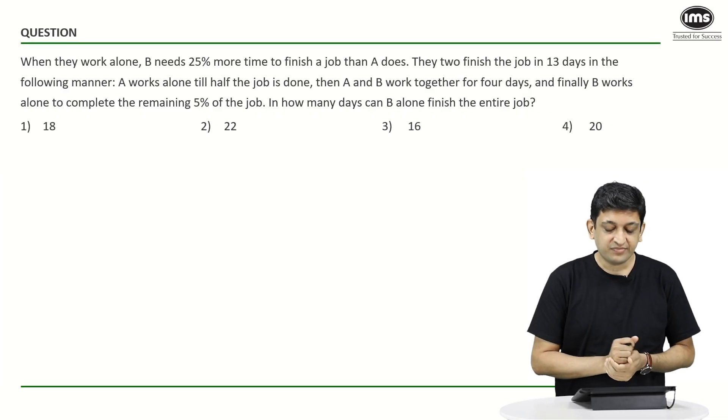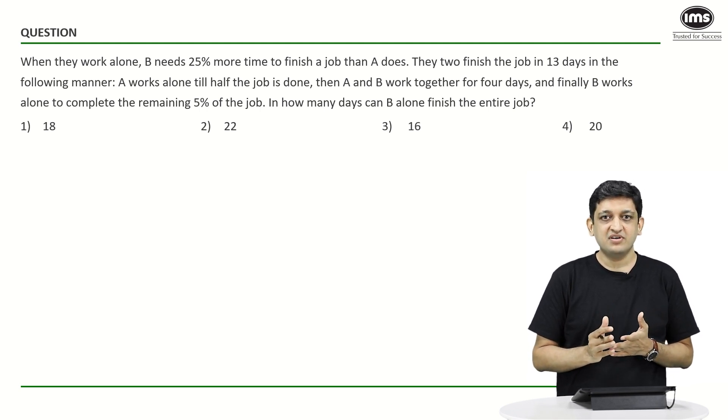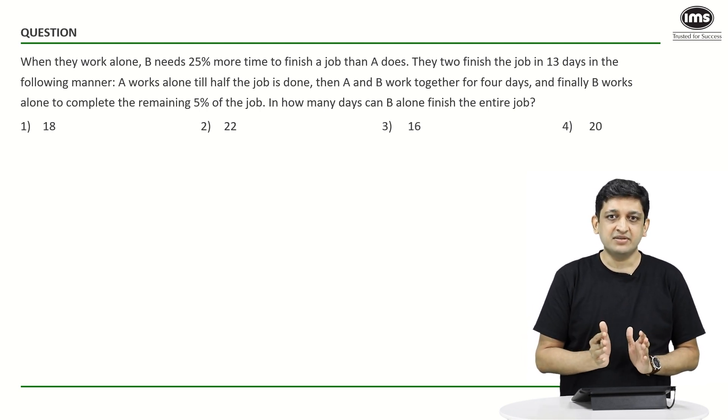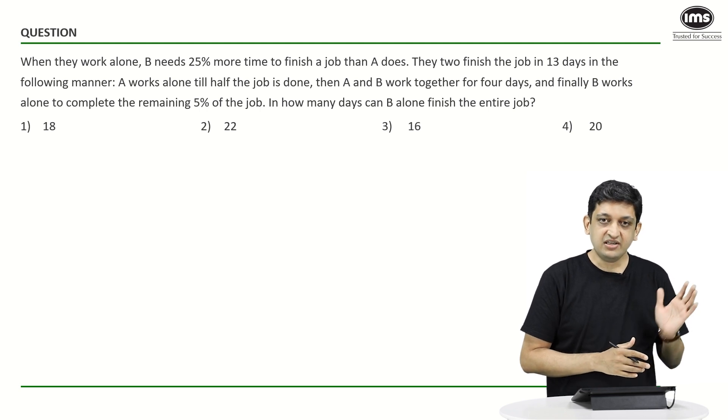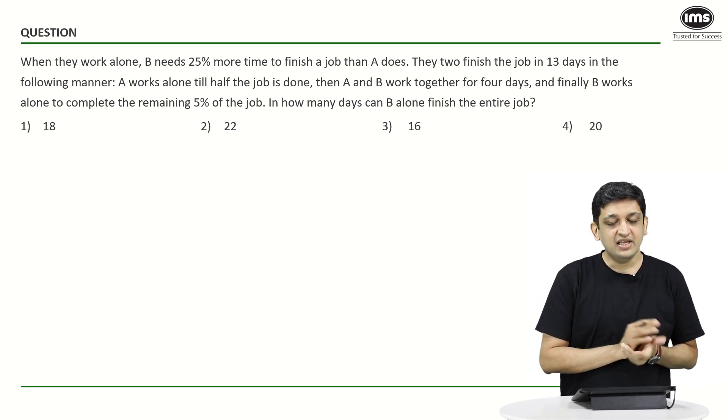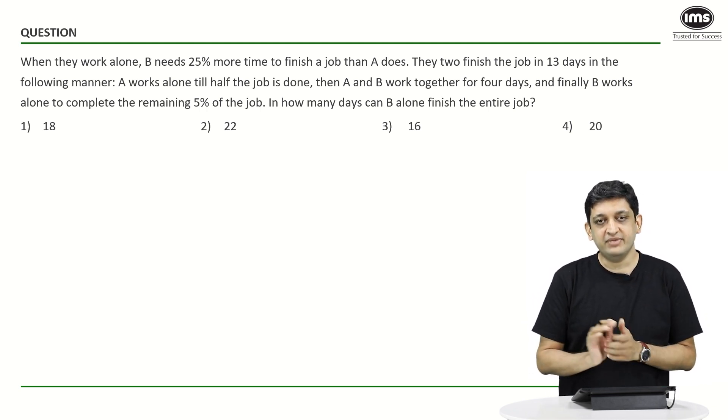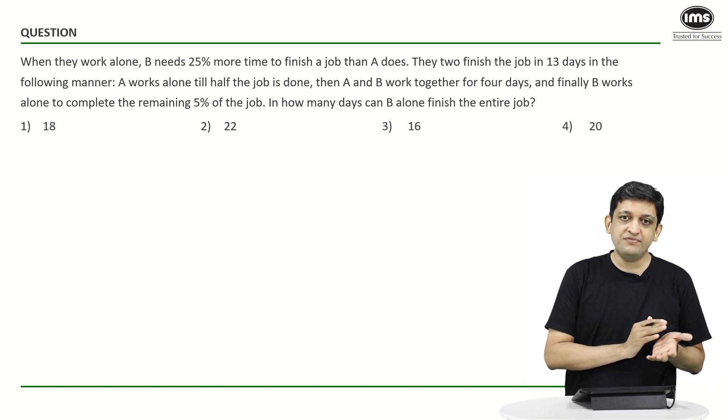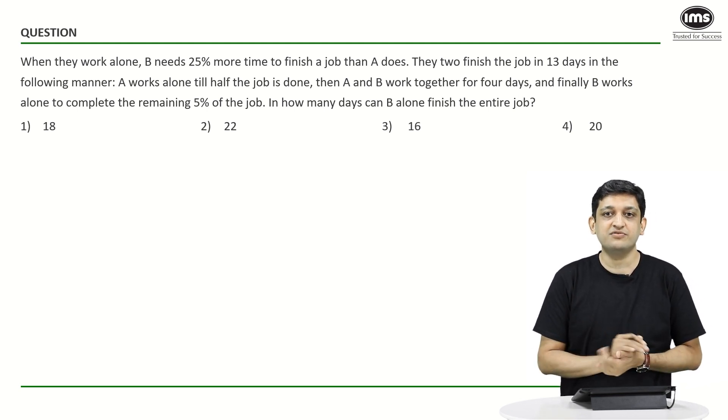In this question, there are two people doing a certain job by splitting the work between them. What happens is initially A works till half the job is done, then A and B work together for some bit, and then B finishes the remaining 5% of the job.